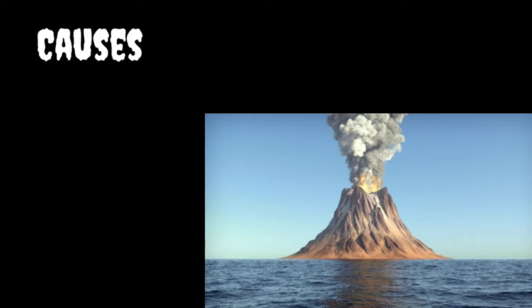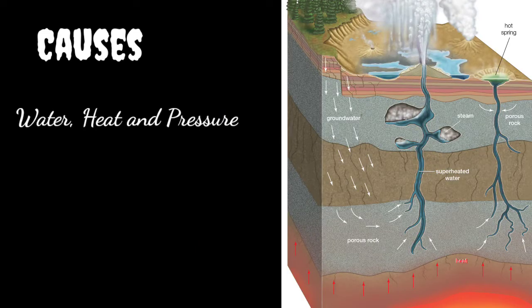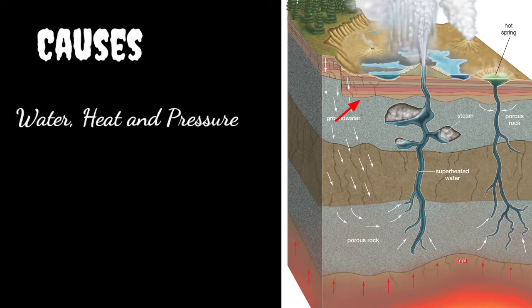The first cause of volcanic eruption is water, heat, and pressure. Water percolates down from the surface of the earth through many cracks, joints, or fissures. Due to the hot magma lying beneath, this water is heated and converts into steam. This steam exerts tremendous pressure on the overlying layers of rock — which we call the crust — and often escapes out with an explosion.